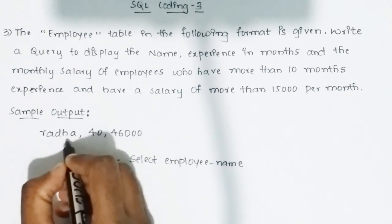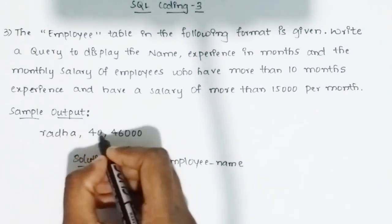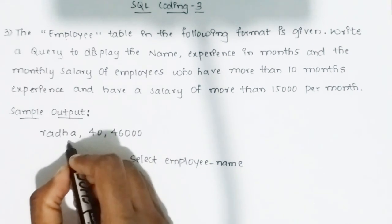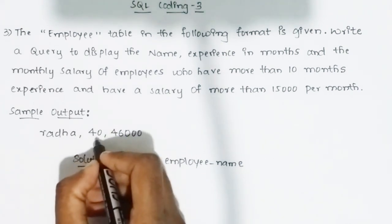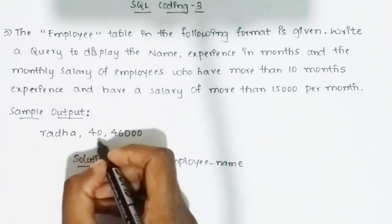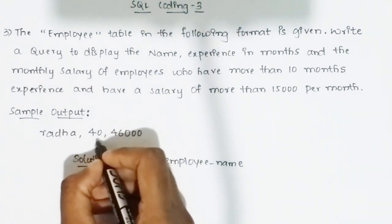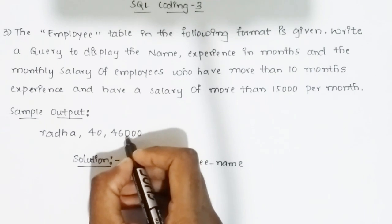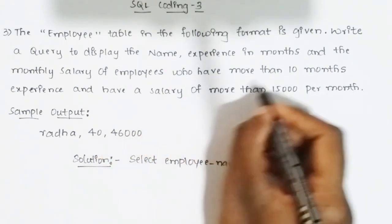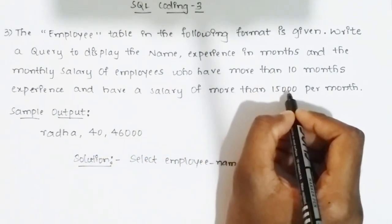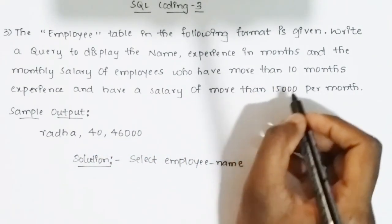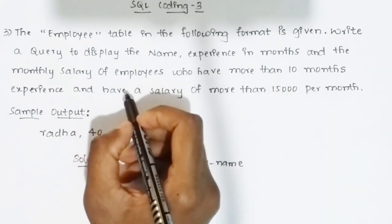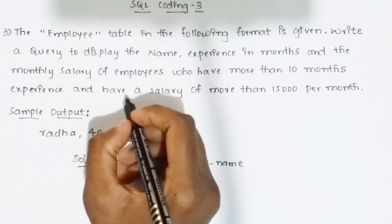The sample output given is: employee name is Radha, experience in months is 40, and monthly salary is 46,000 — which is greater than 15,000 per month. Whenever there is a query or question, you first need to break down the statement.